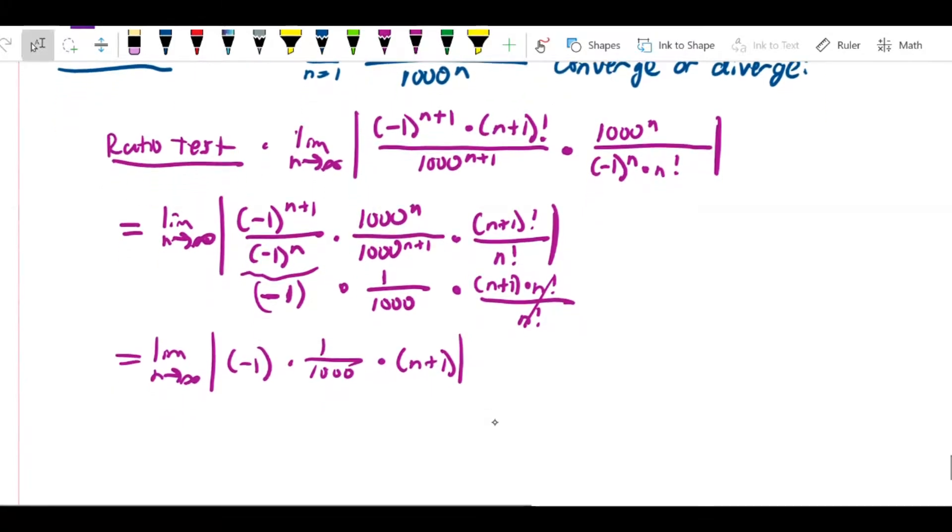Now what we can do is, since this is an absolute value, we can just get rid of that negative 1, and then we don't need the absolute value anymore because everything else here is going to be positive. So this is just going to be the limit as n approaches infinity of n plus 1 over 1000.